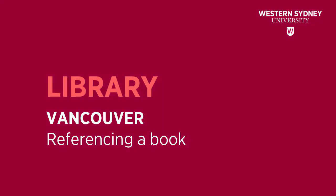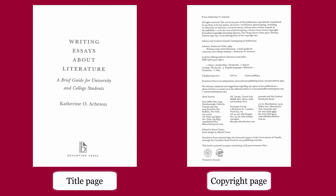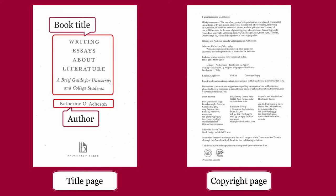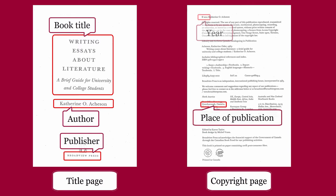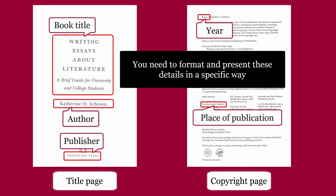This library video will show you how to reference a book using the Vancouver style. The details for citing a book are generally found on the title page and the copyright page. Important details include author, book title, publisher, place of publication, and year. You need to format and present these details in a specific way.